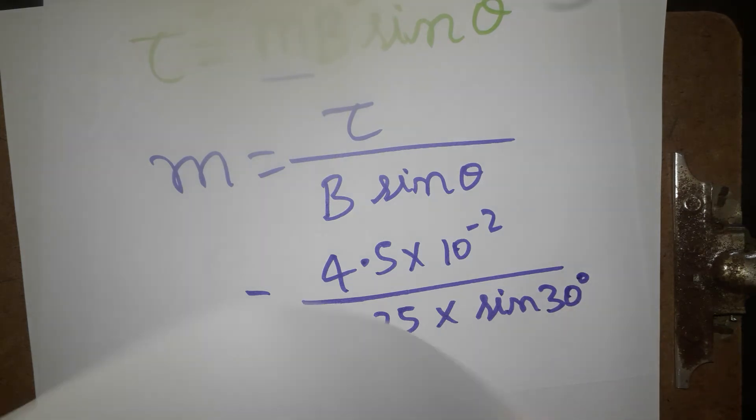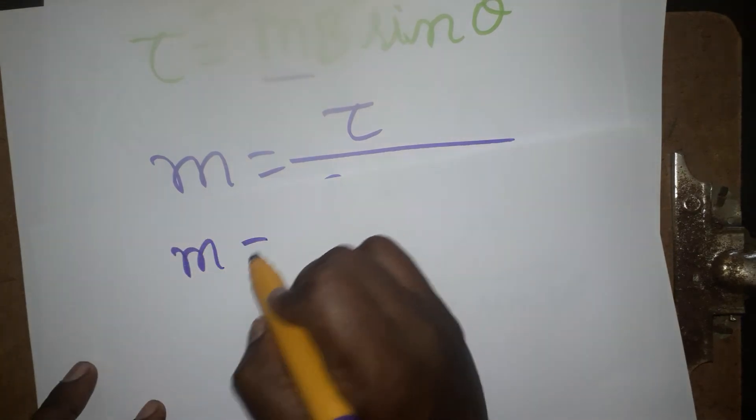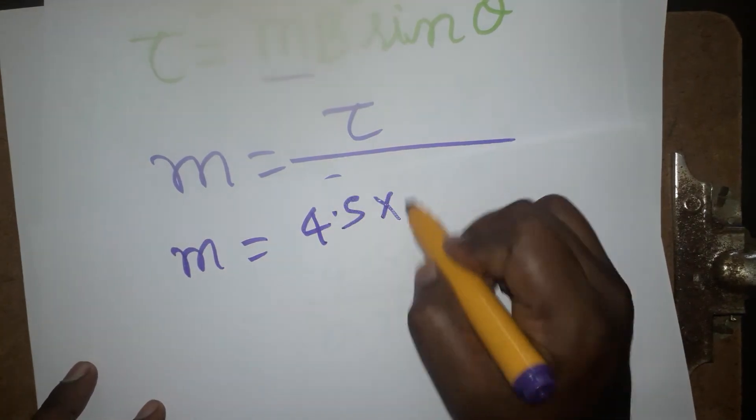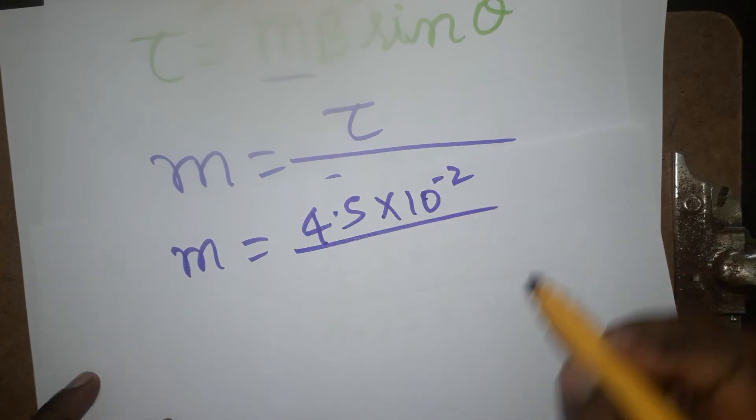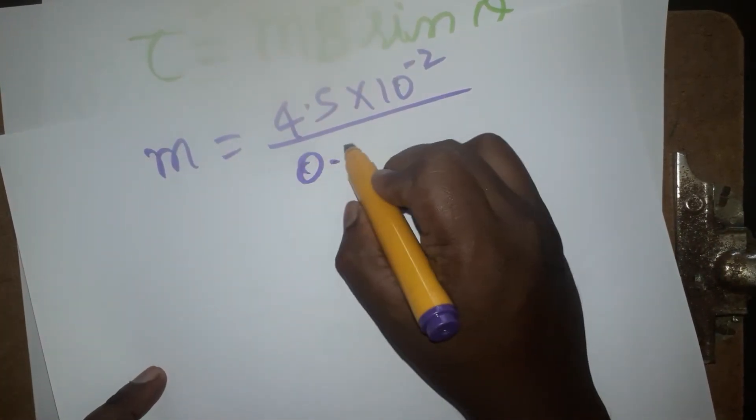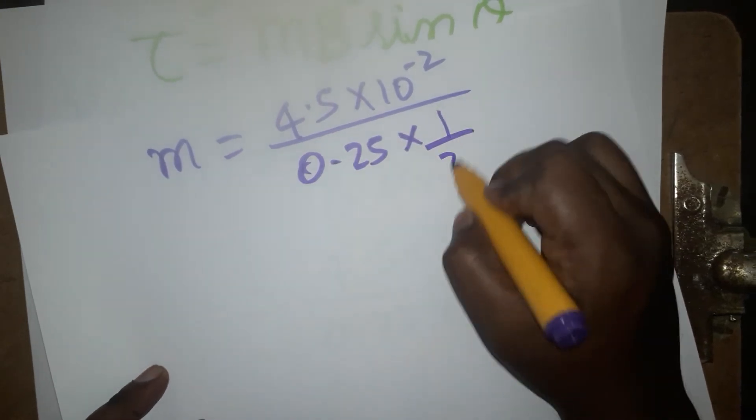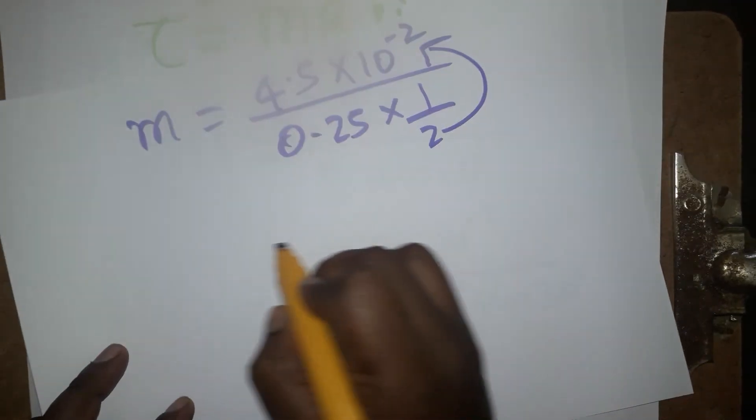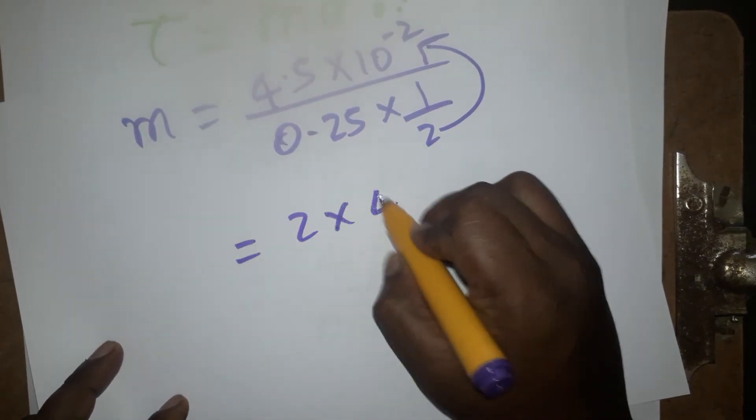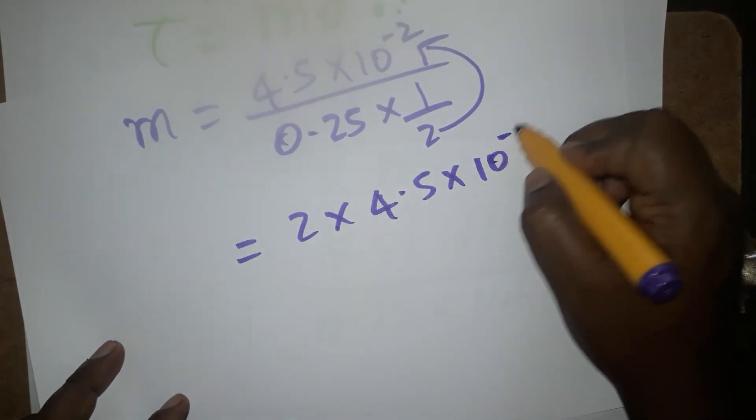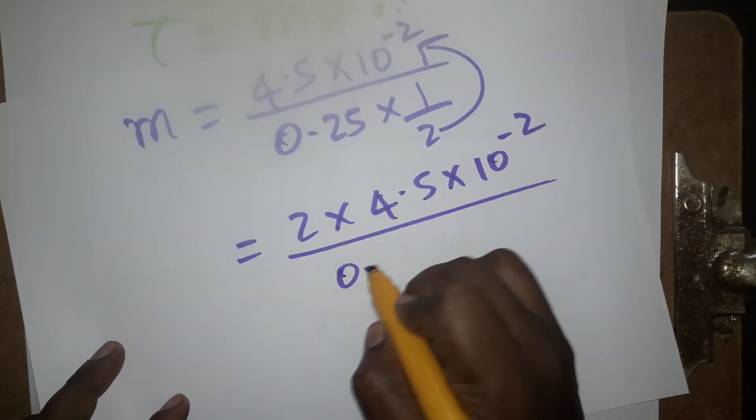The next step: magnetic dipole moment equals 4.5×10⁻² divided by 0.25 times 1/2. Since 1/2 is in the denominator, it goes into the numerator, so we get 2×4.5×10⁻² divided by 0.25.